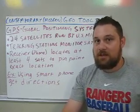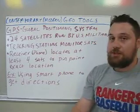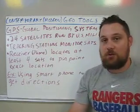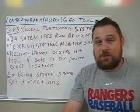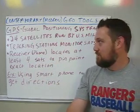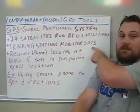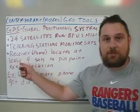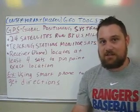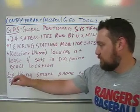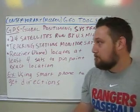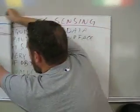Now let's move to contemporary geographic tools. The first one, which you probably use on a daily or weekly basis, is GPS — the Global Positioning System. There are 24 satellites owned and operated by the United States military that you never see but that allow you to navigate using your smartphone. There are tracking stations on the ground that monitor the satellites, and the user must have a receiver that locates at least four satellites to determine an exact location. Examples include smartphones and dedicated GPS units.